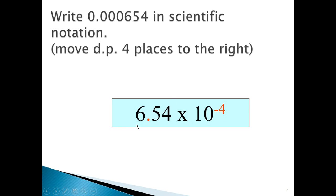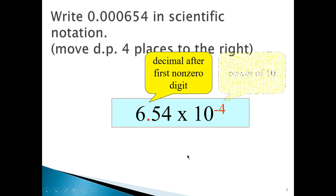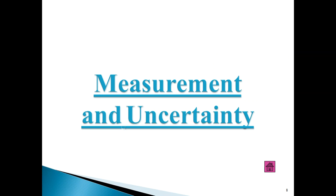The 6.54 will be the coefficient, and minus 4 will be the exponent. When we move the decimal point to the left, the exponent is positive; when we move it to the right, the exponent becomes negative. If you are given a scientific notation expression, then you should be able to work backwards to get it to the standard notation.